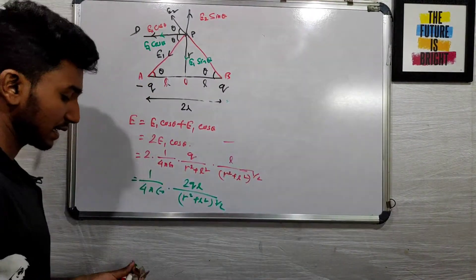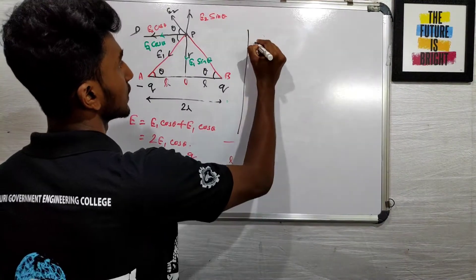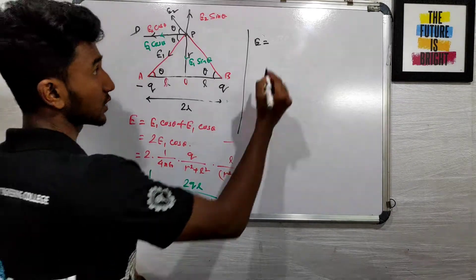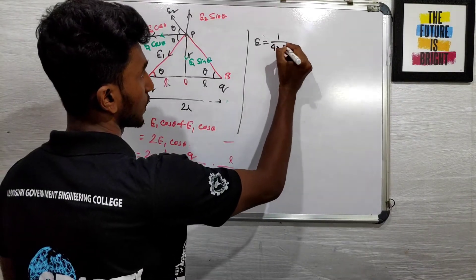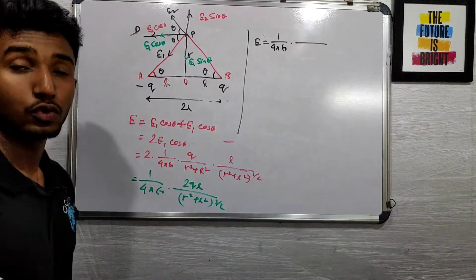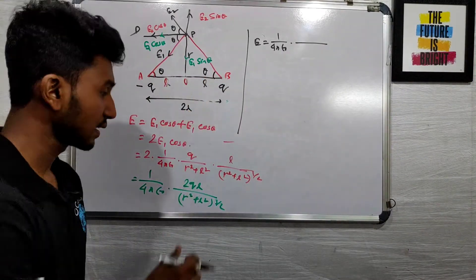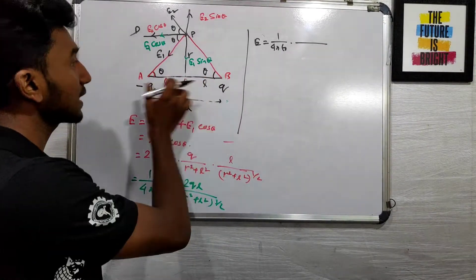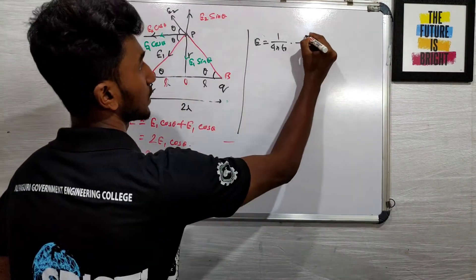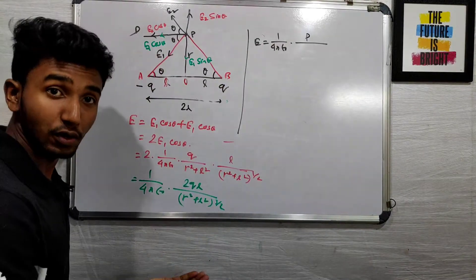E is equal to (1/4πε₀) × 2qL / (R² + L²)^(3/2). This is the formula for the electric field. Here 2qL is written as 2ql.